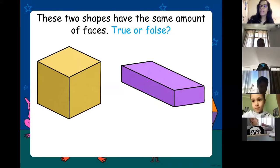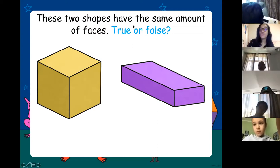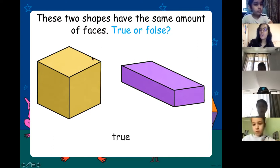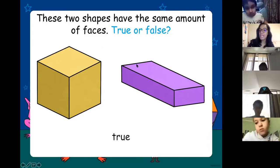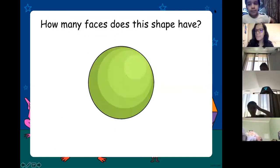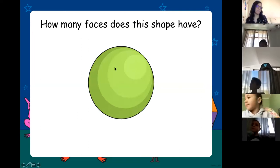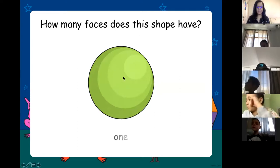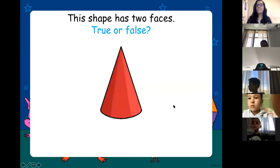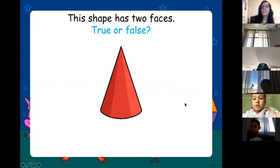Anna says it's true — absolutely right. The cube has six faces and the rectangular prism or cuboid also have six faces. Arthur, how many faces does this shape have? One. This shape has two faces — the bottom and all around.